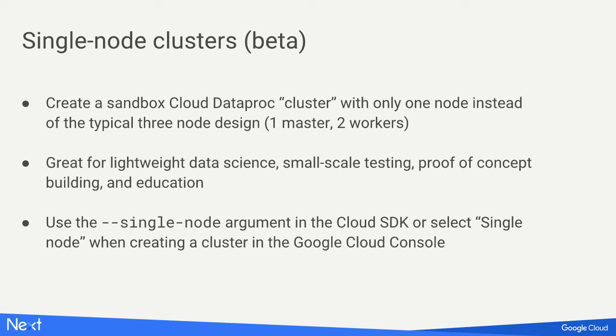Single node clusters: a common request was to just run very small tests without a full-blown cluster. With single node clusters, you create a cluster that's just one node — the master and worker are the same node. This is great for lightweight data science, teaching a class on how to use Spark, or experimentation, where you just need a small VM with Spark installed, not a giant cluster.